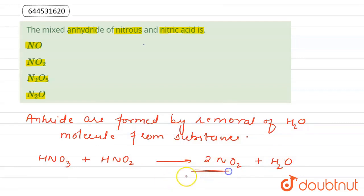So NO2 is mixed anhydride of these two acids, nitric acid and nitrous acid.